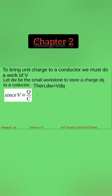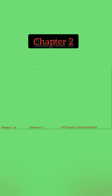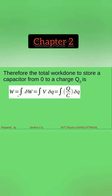Then dW is equal to V dq. And V is equal to q by C. Therefore, dW can be written as dW equals q by C times dq. To find the total work done, we charge the capacitor from 0 to a maximum charge q0. Total work done W is equal to the integral of dW.